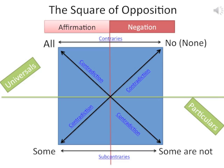The opposing corners on the square of opposition represent probably the most important concept altogether — the idea of contradiction. This is the one that Aristotle establishes as a rule of logical reasoning: the fact that we need to avoid contradiction wherever possible. On the square of opposition, we can diagram this with the opposing corners on diagonals.